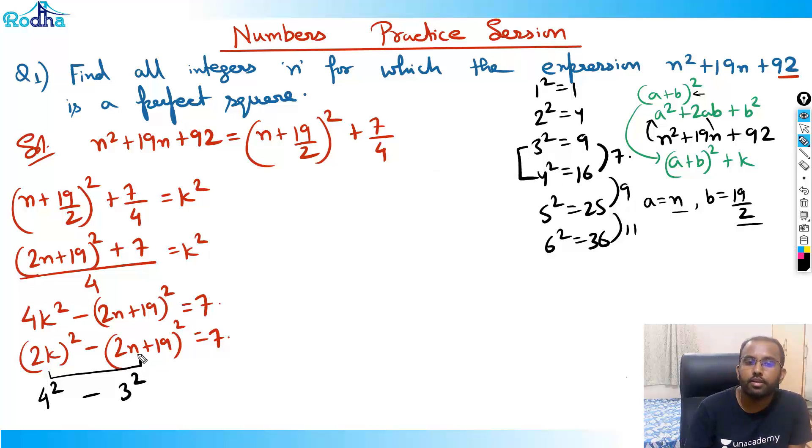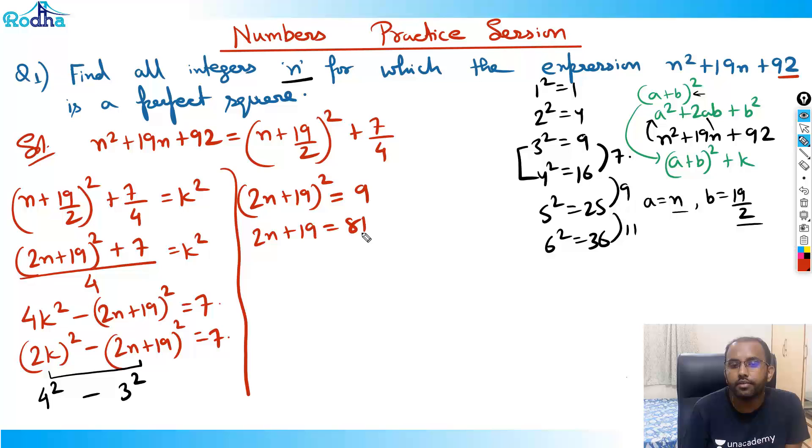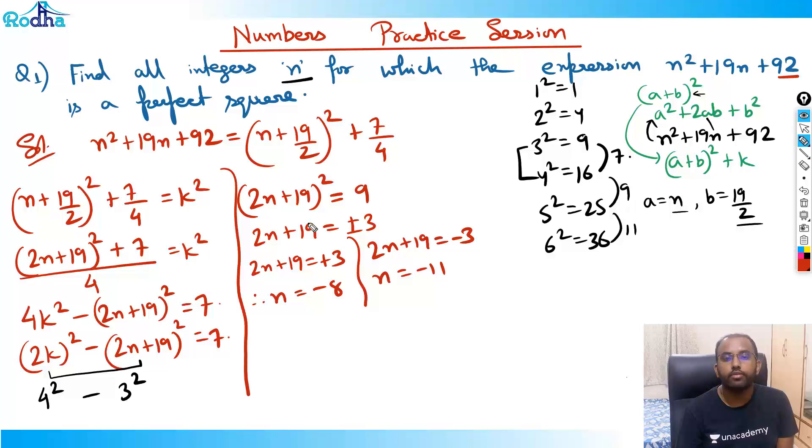One is 4² and one is 3². So I was supposed to find the values of n. Can I write this value as (2n + 19)² should be equal to 9 actually. That means 2n + 19 should be equal to ±3 because it is 9 here. Now when 2n + 19 is +3, therefore n is equal to -8. And 2n + 19 is equal to -3, so n is equal to -11. So I think 2 values of n will satisfy this, that is -8 and -11. Therefore, -8 and -11 is the answer.